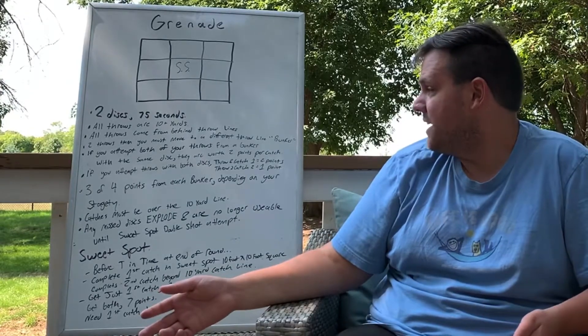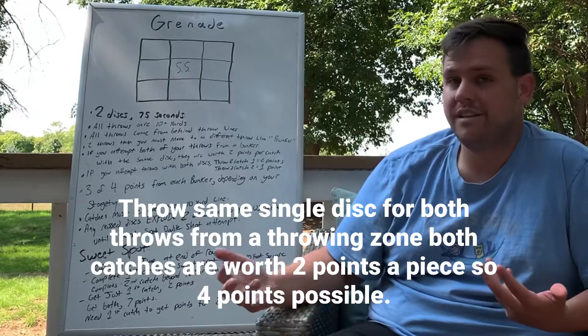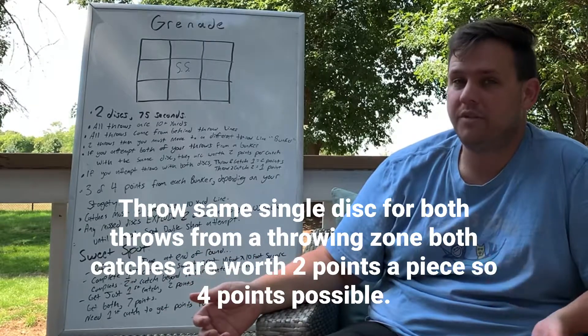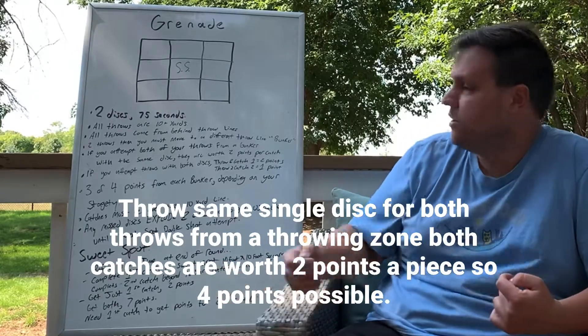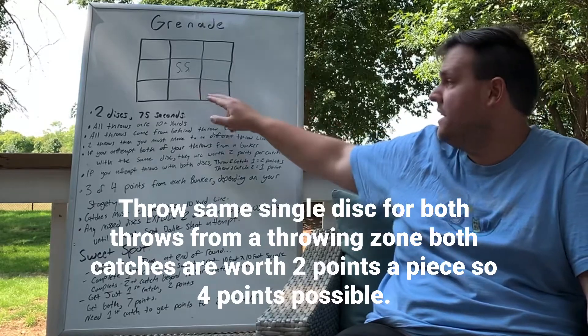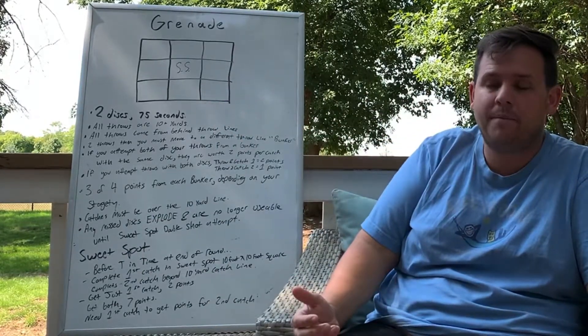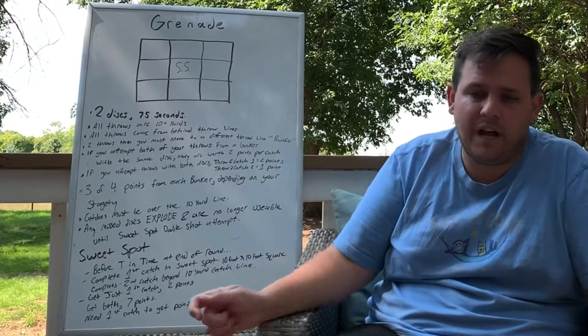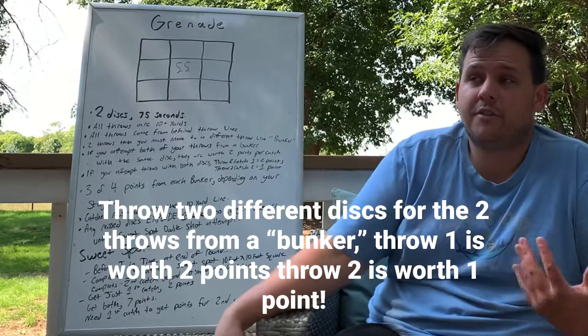Where it gets really interesting is you can use just one of the discs or you could use both discs. If you use just one disc for your throw attempts, so you make a throw here, that's a two-point throw attempt. Your second throw attempt, if you did it with that same disc, you just bring it back or ran out and grabbed it, went back to the line and threw again, that would be another two-point attempt. So it would be four points total.